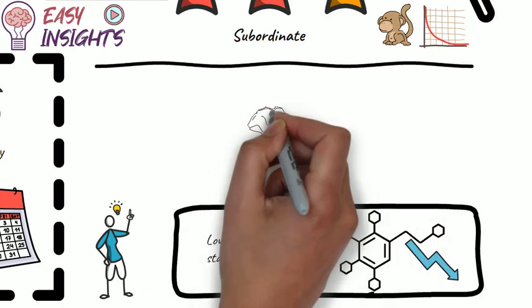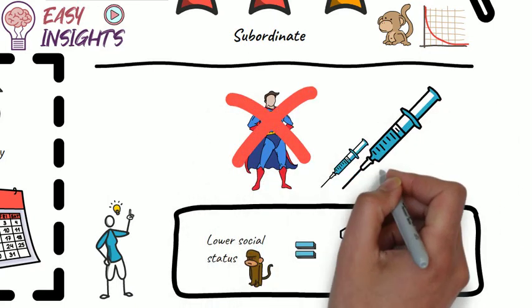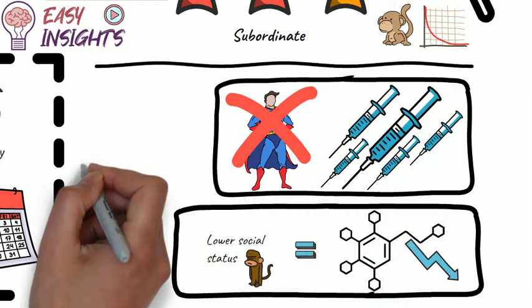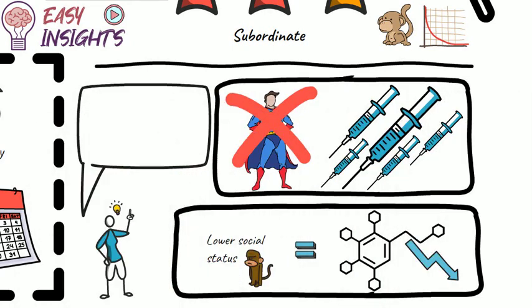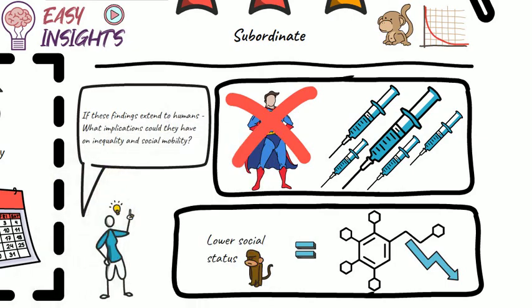Second, this same demographic exhibits greater vulnerability and likelihood of being addicted to dopamine-enhancing cocaine. So question, if these findings extend to humans, what implications could they have on inequality and social mobility?